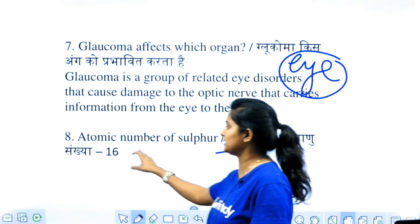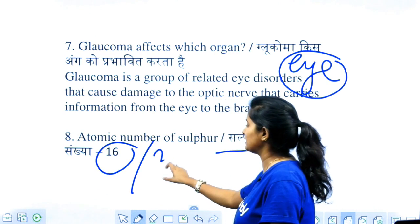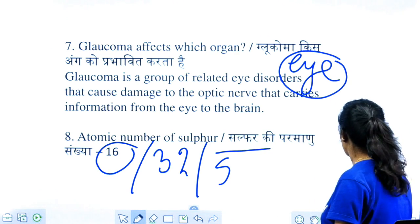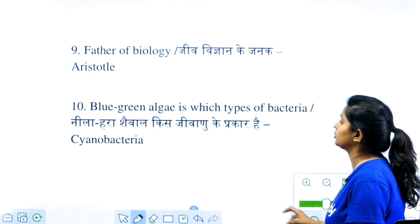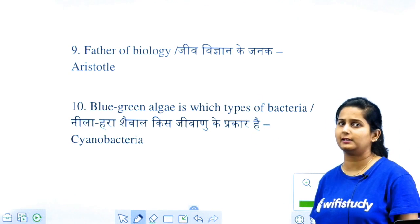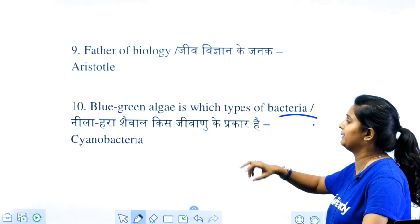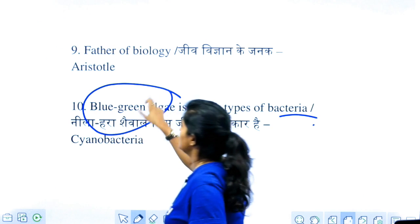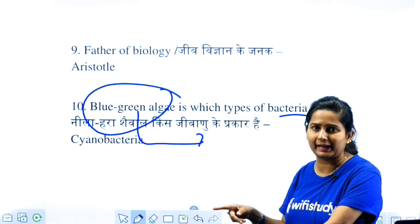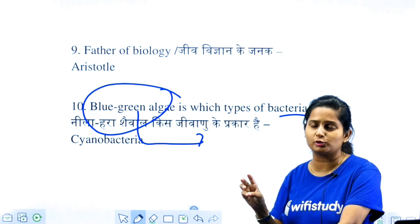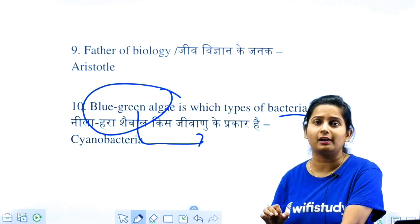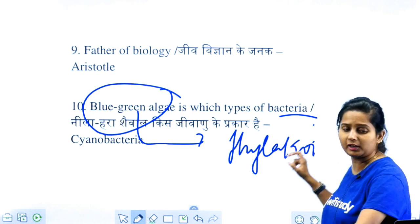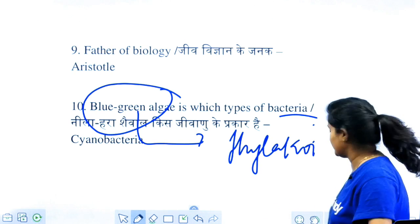Atomic number of sulfur — remember it is 32. It belongs to the oxygen family. The father of biology is Aristotle. Blue-green algae is a type of cyanobacteria. What do you get in blue-green algae? Options include Golgi bodies, mitochondria, lysosomes, and thylakoid membrane. The correct answer is the thylakoid membrane.